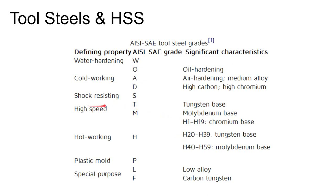Tool steels are grouped by their characteristics — sometimes by how they are hardened. For instance, A is an air-hardening tool steel, O is an oil-hardening tool steel, followed by a number: A2, D2, or O1. We use O1 tool steel in the tool design class because it's inexpensive and easy to work with and heat treat. S-series are shock-resisting tool steels — S7 is a very tough shock-resisting grade, and we have some S7 down in the shop.